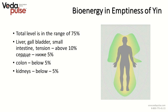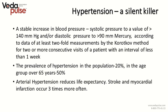There would also be emaciation of chi of kidneys, which would be below 5% as well. Let's talk about one of the main disorders of this constitution type — hypertension, the silent killer. A stable increase in blood pressure refers to systolic pressure above 140 mmHg and/or diastolic pressure above 90 mmHg, according to at least two-fold measurements by the Korotkov method for two or more consecutive visits with an interval of less than one week. Prevalence of hypertension in the population is 20%; in the age group over 65 years it is 50%.